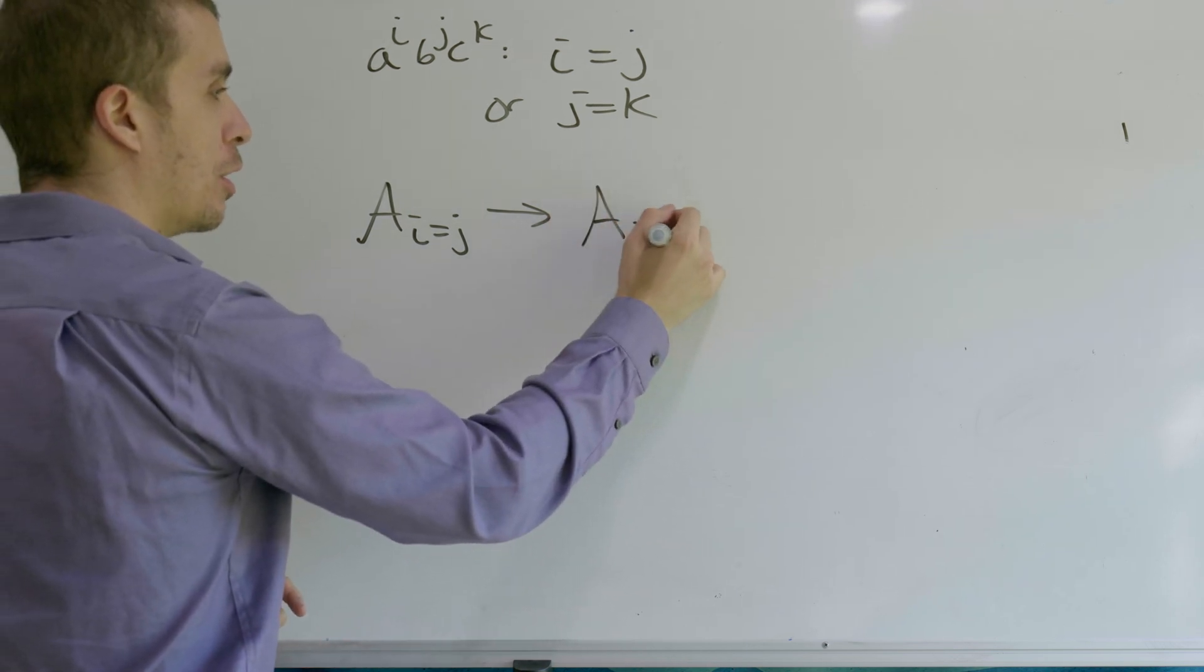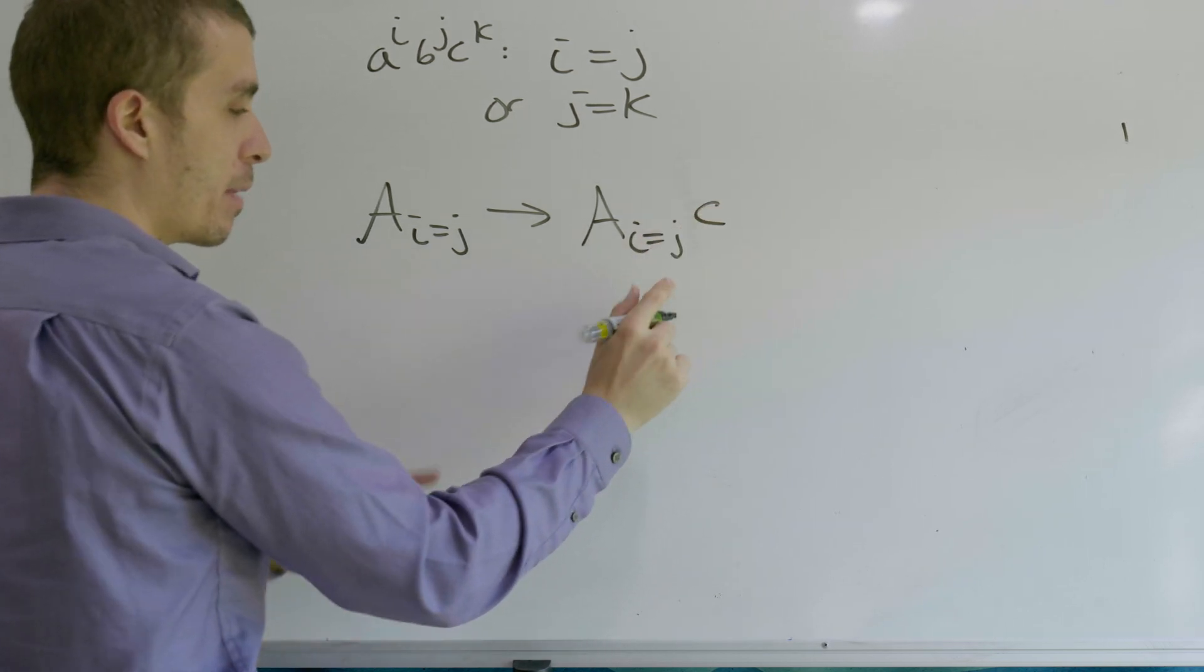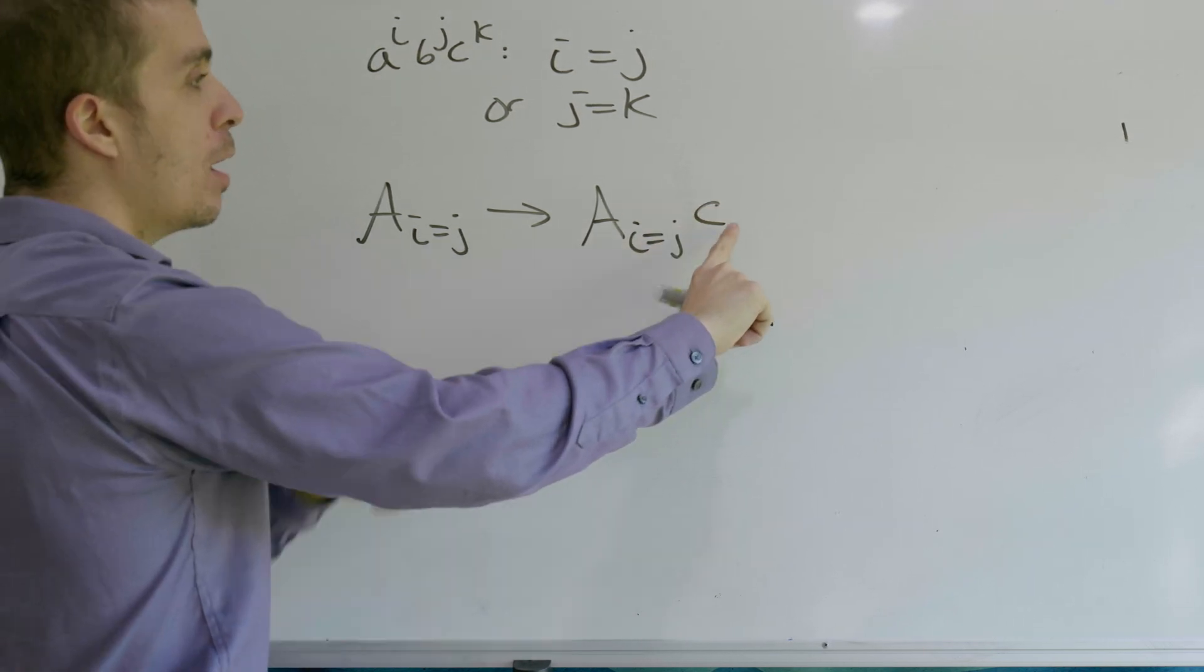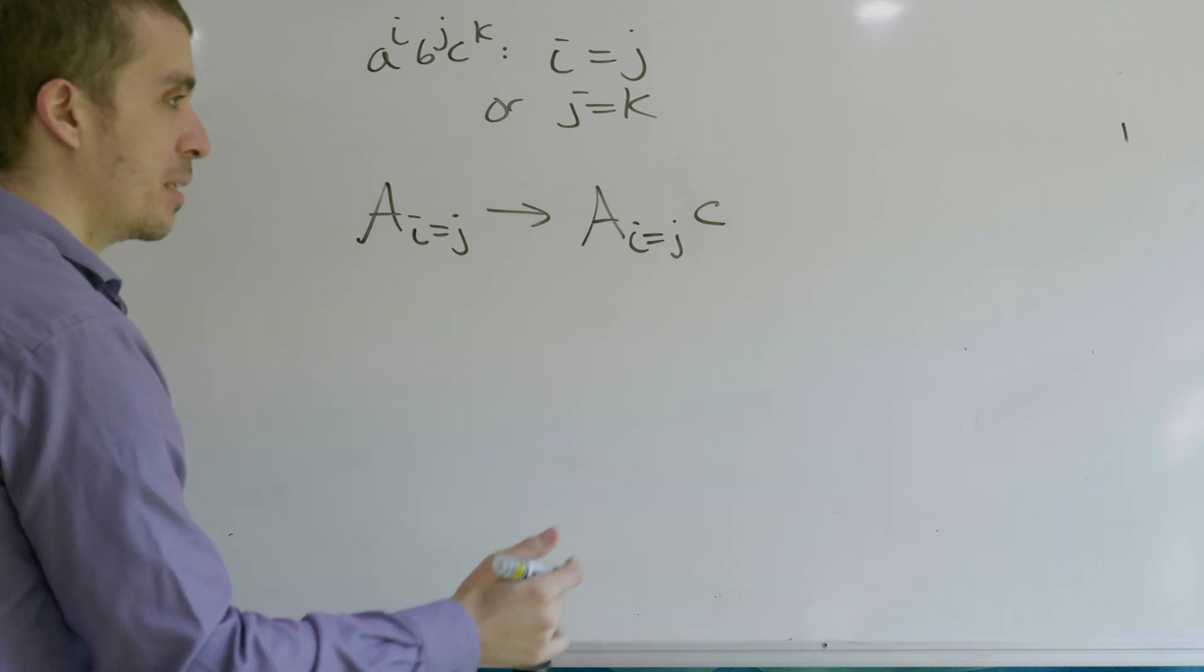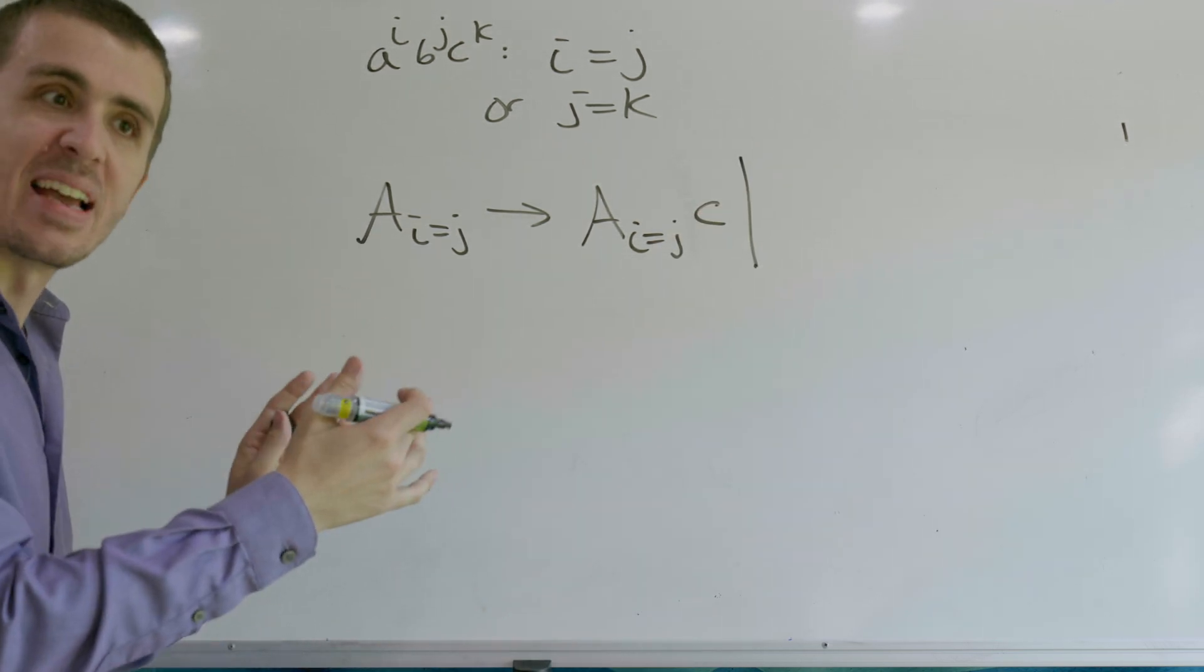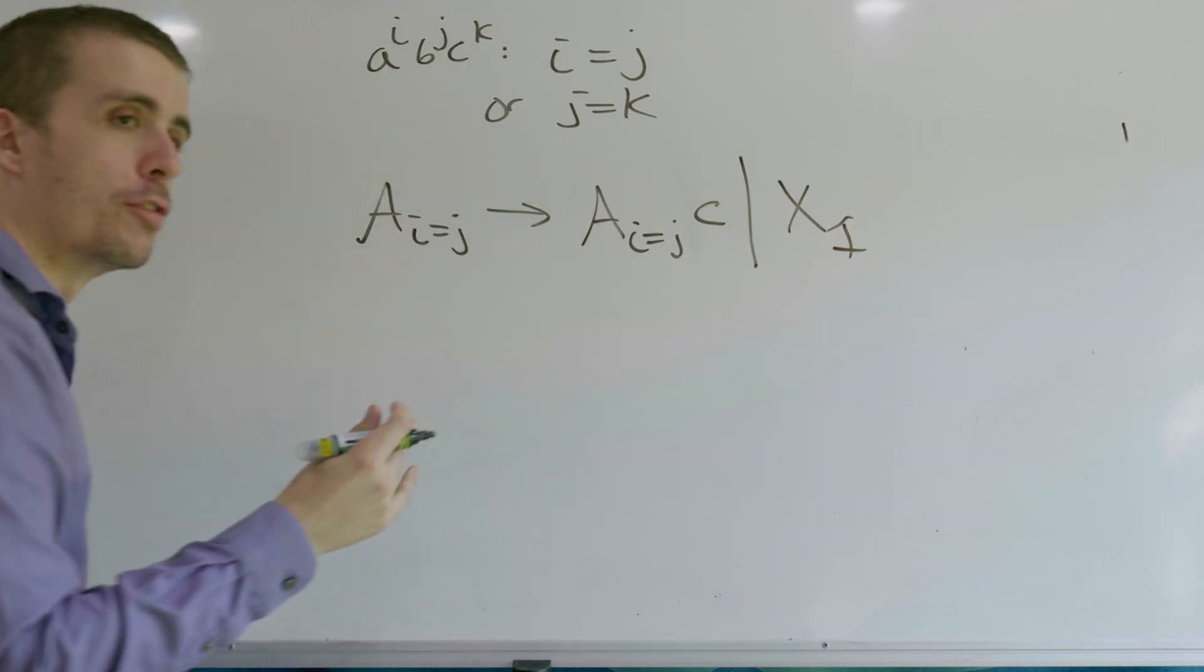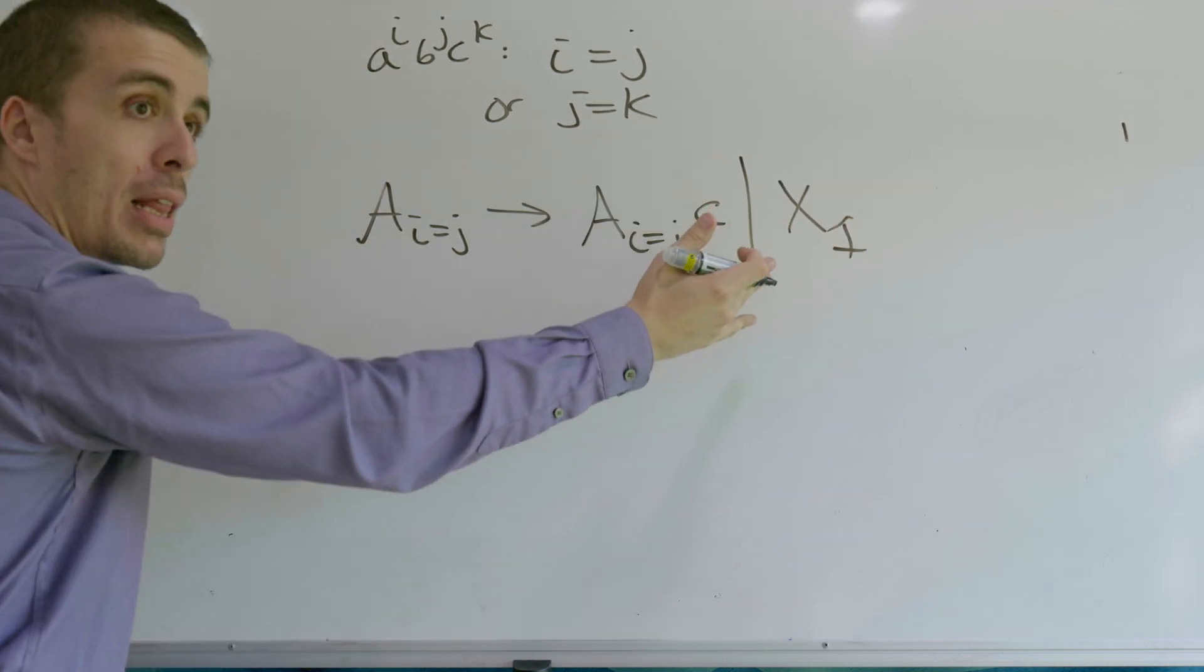So notice also that the C's need to be generated at the end. So I'm going to recursively call this variable and then spout off the C at the end. And then once we're done, we need to start generating an equal number of A's and B's. And that's pretty easy to do, but we need to transfer to a different variable. So I'm going to call it X1.